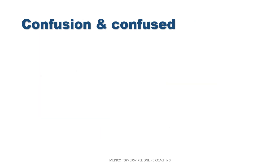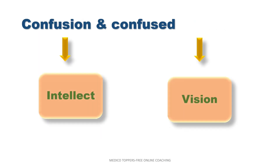Confusion and confused: confusion is an intellectual issue — it is under intellect. But confused is under vision — confused vision. In BBCR, confusion is under sensorium and confused is under mind. This is an important distinction.